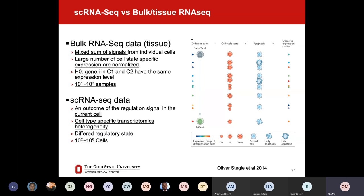In terms of sample size: bulk RNA-seq usually has 10 to 1,000 samples — if you have 1,000 bulk RNA-seq datasets, that's huge. But at the single cell level, cells could be hundreds to one million or several millions. So we have enough cell samples to identify heterogeneity, build the cell atlas, identify rare cell types, and identify minimal residual disease cell types in cancer. That's the power of single cell RNA-seq data.